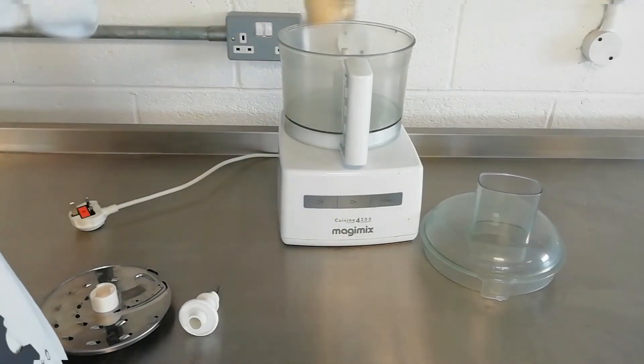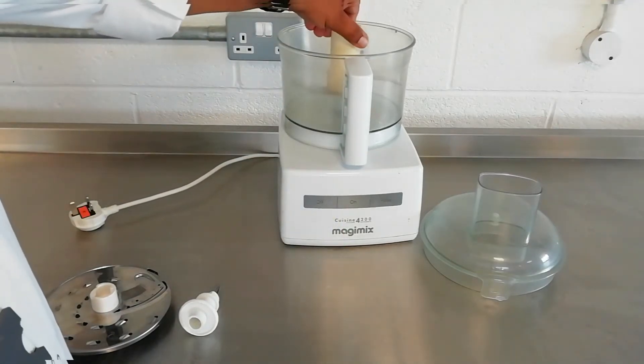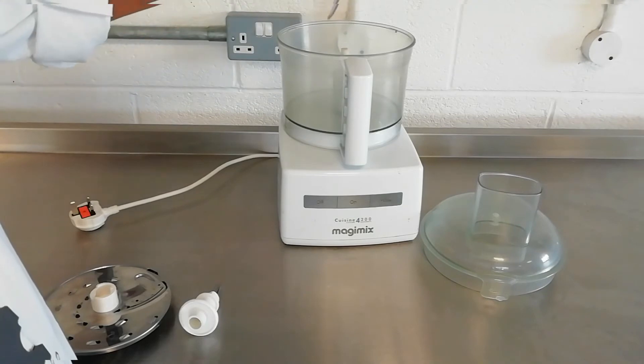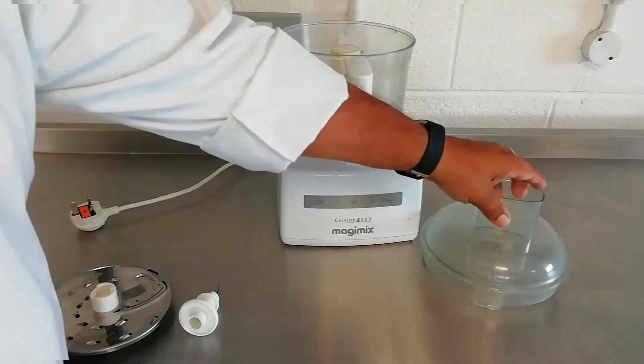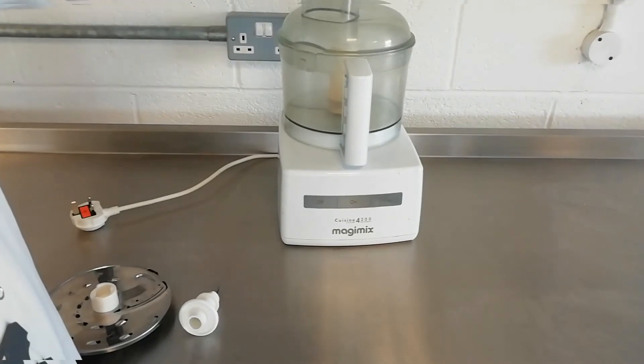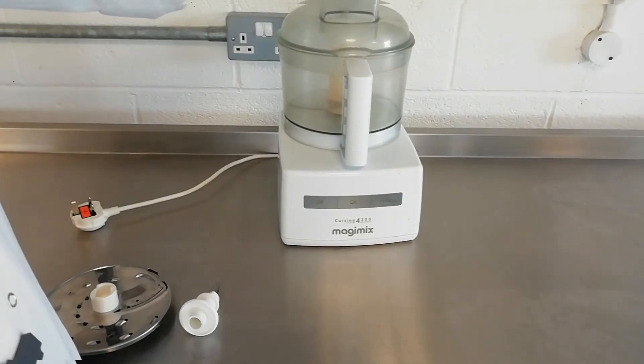Next of all we put our blade very carefully because these blades are very sharp. And then we clip our lid across.